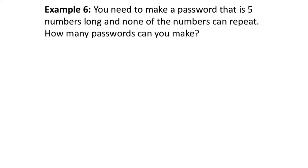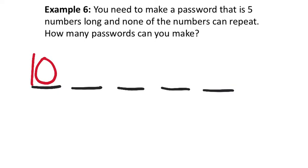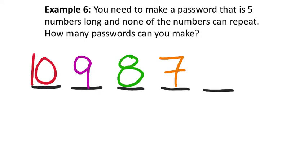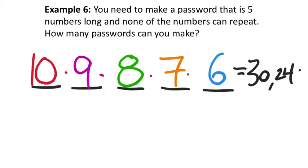You need to make a password that is five numbers long, and none of the numbers can repeat. The first digit has ten options, but one is used, so the second has nine. The third has eight, the fourth has seven, and the fifth has six. Using the calculator: 10 times 9 times 8 times 7 times 6 equals 30,240 possible passwords.